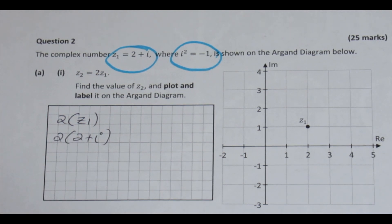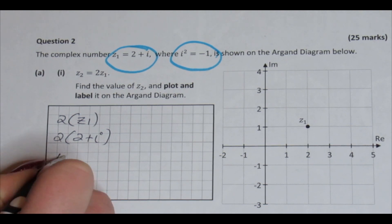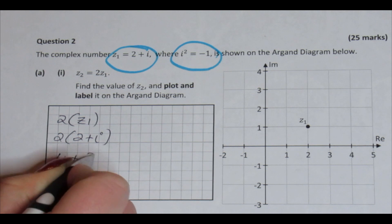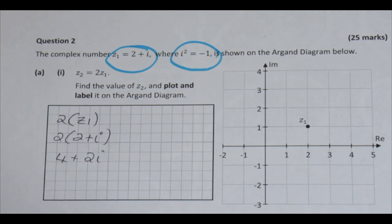2 multiplied by 2 plus i. I always make sure that my i's have a little curl on them and have a decent dot on the top, just so I don't get them mixed up with 1's. And you'll be surprised how easily that can happen. So if your writing is a bit messy and you're aware of that, maybe make the effort just to make the i's very obvious to yourself. 2 by 2 is 4. 2 by i is 2i. That is my complex number Z2. So I'm just going to label that there.